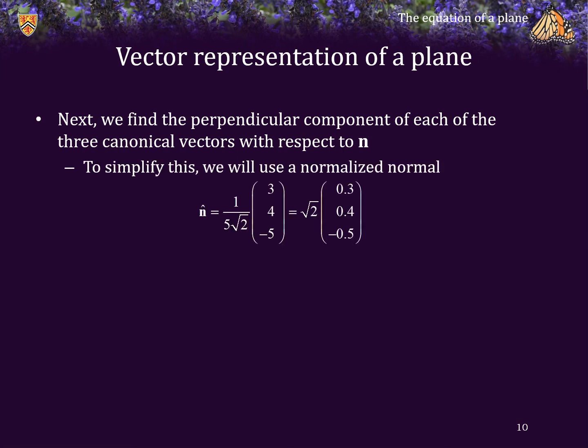Now, to make this calculation a little simpler, we're going to normalize the normal vector. So, the normalized normal vector is root 2 times the vector 0.3, 0.4, negative 0.5.